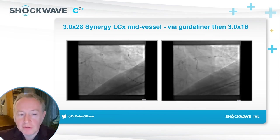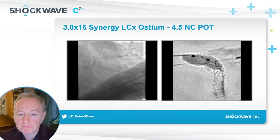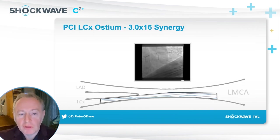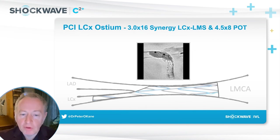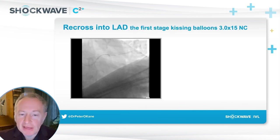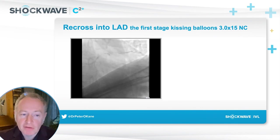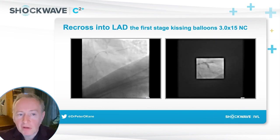We then turn our attention to the circumflex, which is a challenging vessel not only to wire but also to deliver equipment. We initially deliver a stent to the more mid-proximal vessel. Then we take a stent to the proximal vessel and ostium back into the left main stem and perform the POT, as you just saw, with a 4.5 balloon. At this point we're ready to do the rewiring of the LAD, as my strategy in this case is a DK culotte. We use a dual-lumen catheter to avoid any risk of going behind struts, getting the wire placed across. We remove the jailed wire and perform the first stage kiss with a 3.0 NC in each limb.